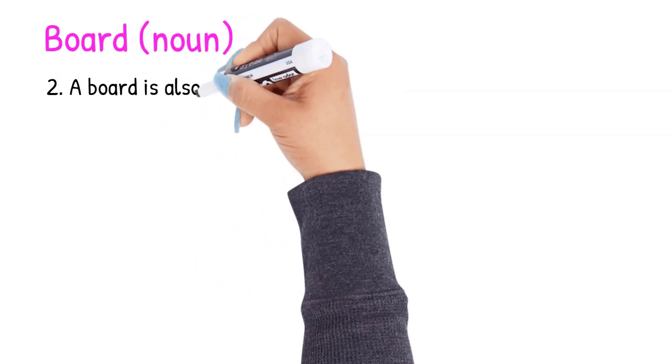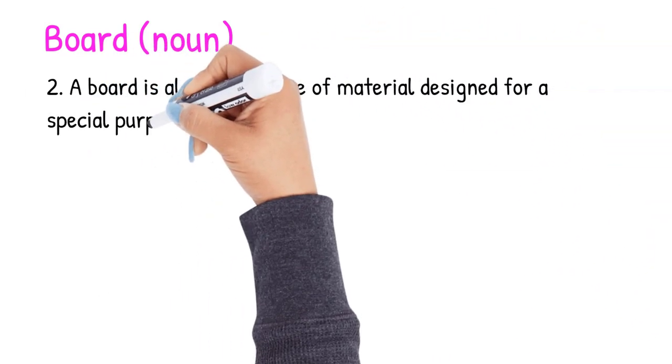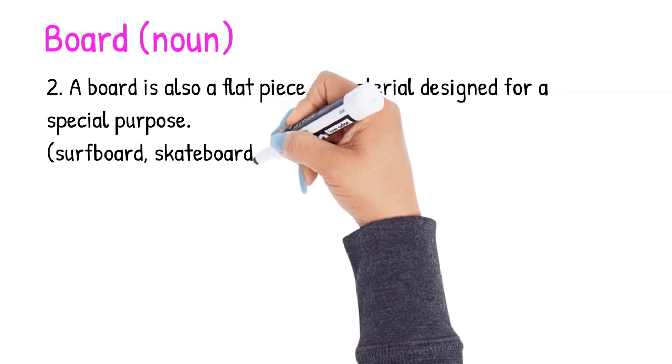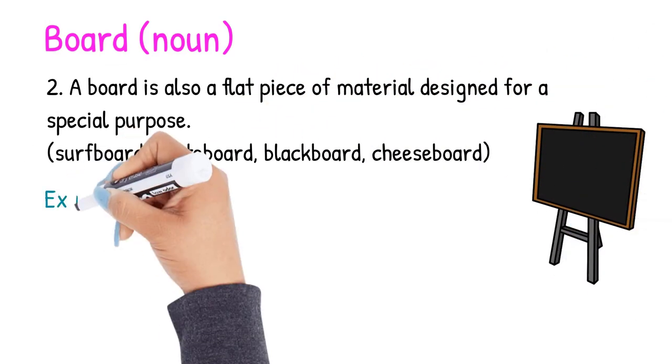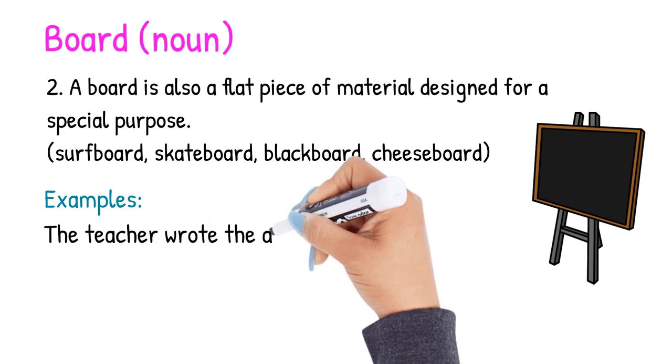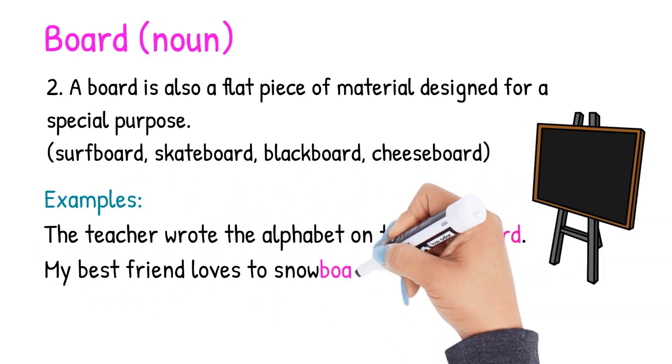Two. A board is also a flat piece of material designed for a special purpose. Like a surfboard, skateboard, blackboard, or cheese board. Examples. The teacher wrote the alphabet on the blackboard. My best friend loves to snowboard.